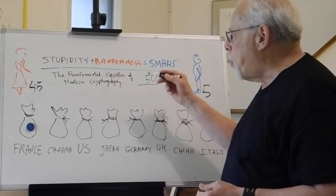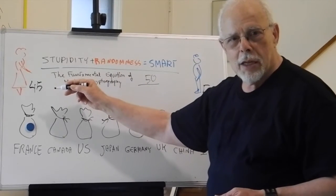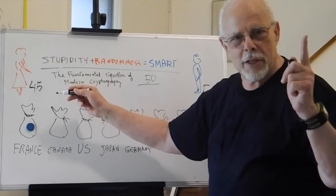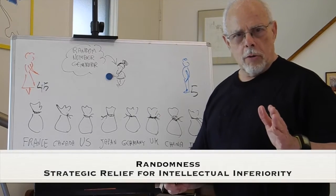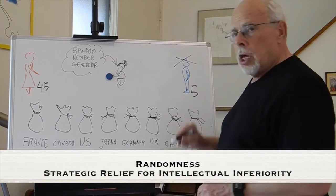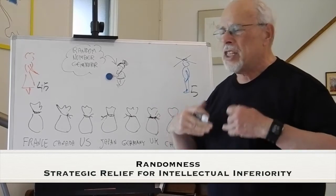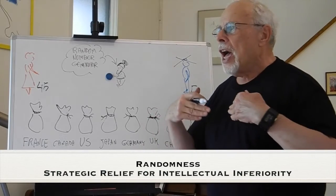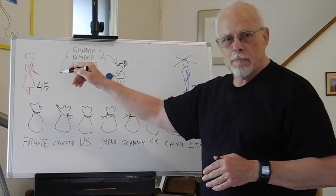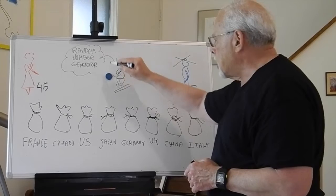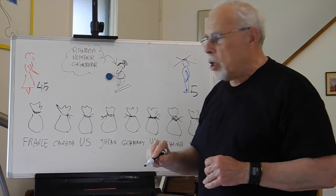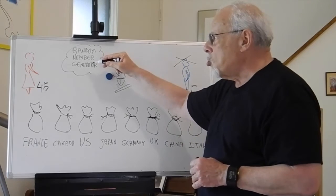Is there anything Bob can do to neutralize Alice's smart advantage? Yes. What Bob should do is surrender his brain power, his decision-making, his attempts to outguess and outsmart Alice, and instead invite a little dwarf — a random number generator.